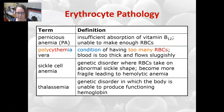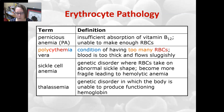Pernicious anemia is due to insufficient absorption of vitamin B12, which means you are unable to make enough red cells because vitamin B12 is needed for copying cells, making more cells, and copying DNA.